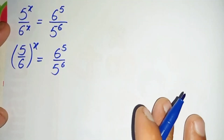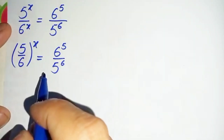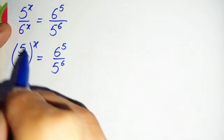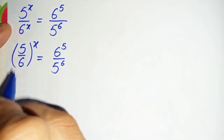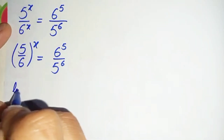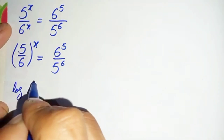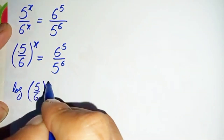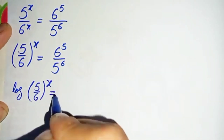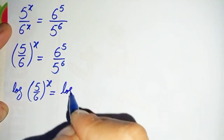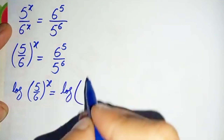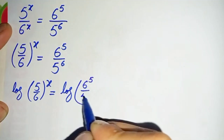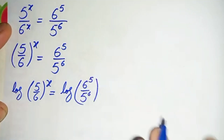Now, to find the value of x we will take log on both sides of this equation. Taking log on both sides gives us: log of 5 divided by 6, whole raised to power x, is equal to log of 6 raised to power 5 divided by 5 raised to power 6.